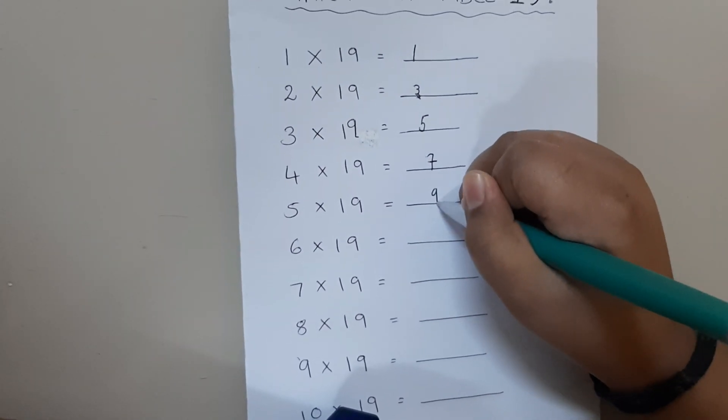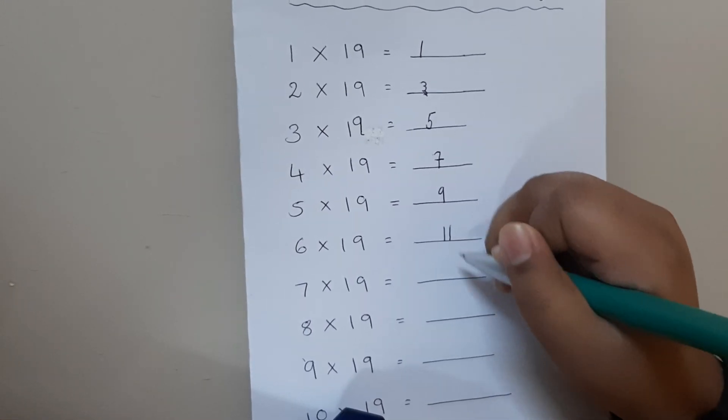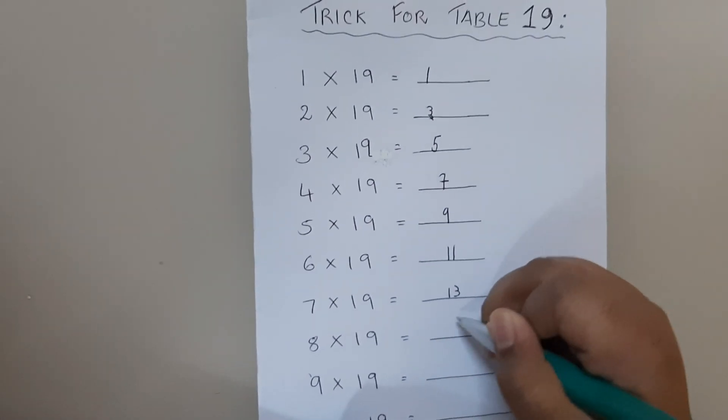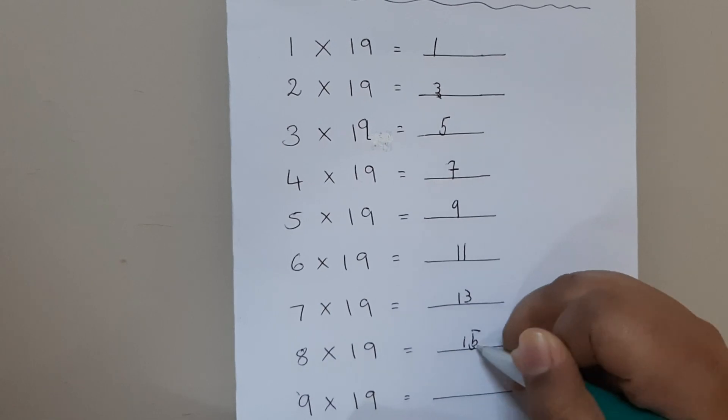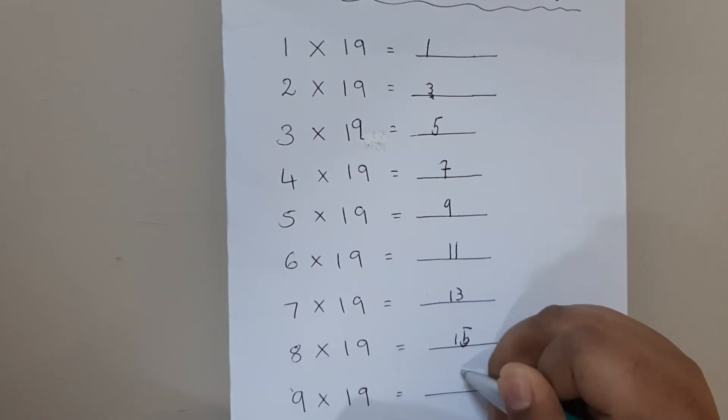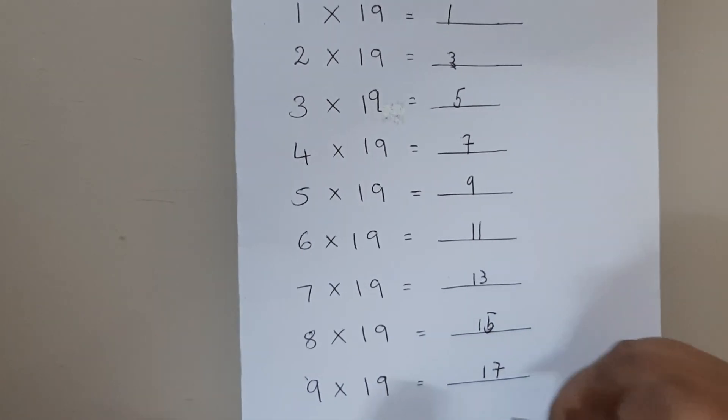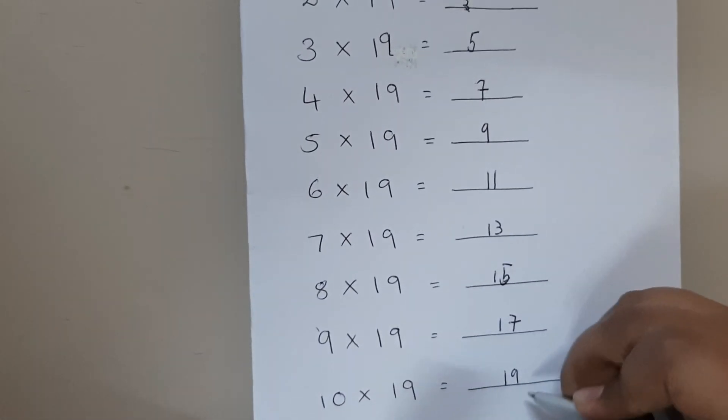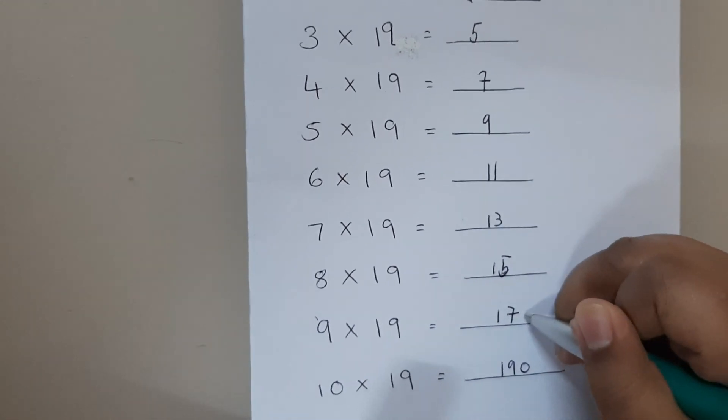Skip 10 and write 11, skip 12 and write 13, skip 14 and write 15, skip 16 and write 17, skip 18 and write 19. Now we have to start from 0 to 9: 0, 1, 2...